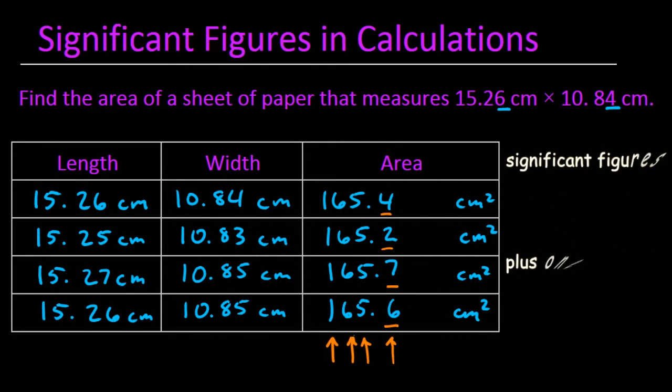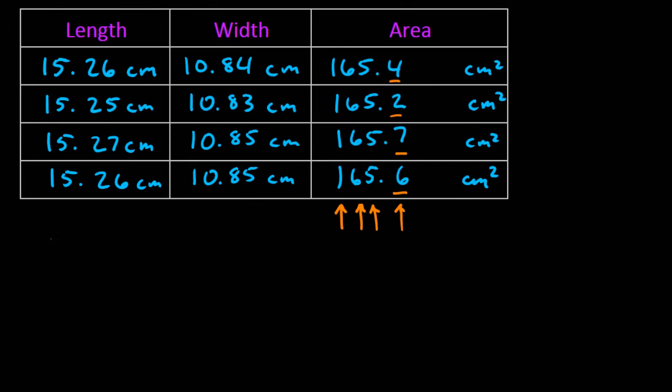More importantly, we should see that all of the answers have four significant figures, which leads us to this rule for rounding for multiplication and division.